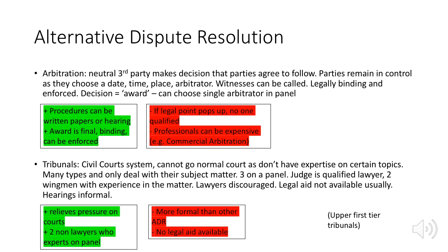Another topic is alternative dispute resolution. There are many different types of ADR, one being arbitration. This is when a neutral third party makes a decision that the parties agreed to follow. Parties remain in control as they choose a date, time, place, and arbitrator. Witnesses can be called. It's legally binding and enforced — the decision is called an award, and you can choose a single arbitrator or a panel. Positives include flexible procedures, either written papers or a hearing, and the award is final, binding, and enforceable. Negatives include that if a legal point arises no one is really qualified, and professionals can be expensive, especially in commercial arbitration.